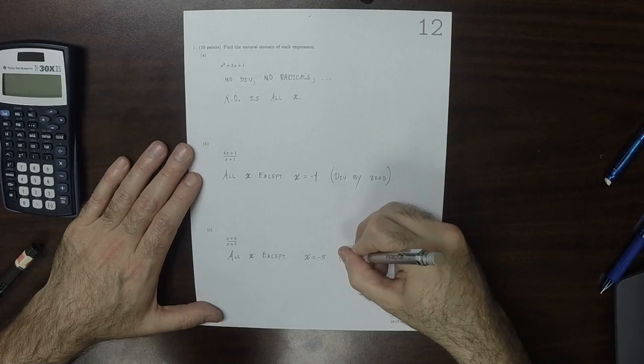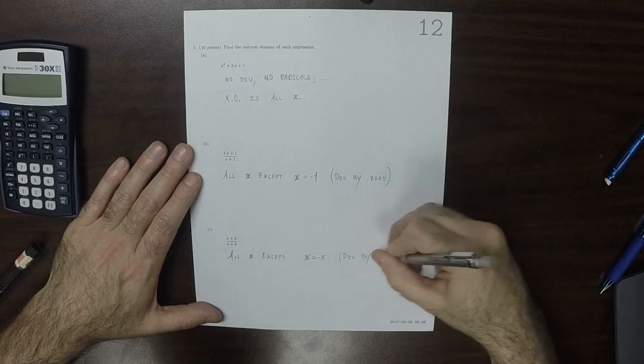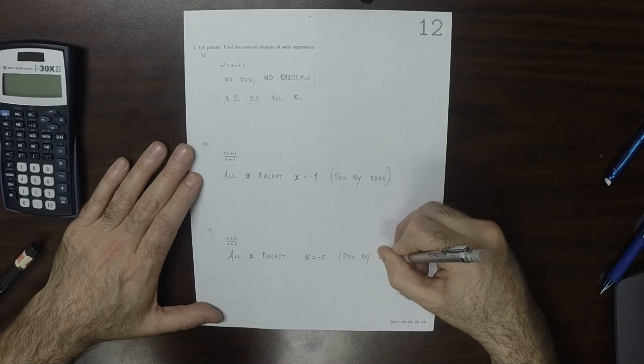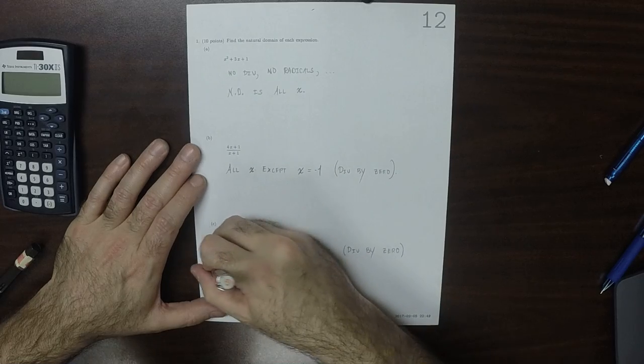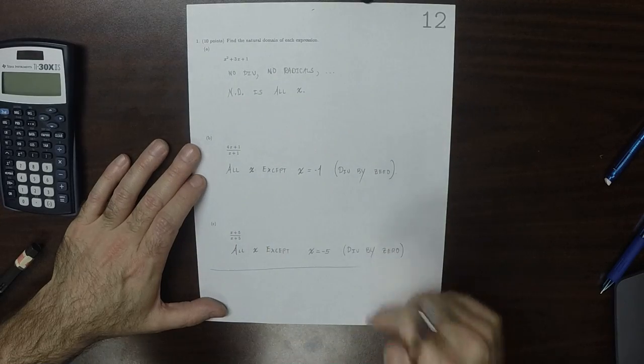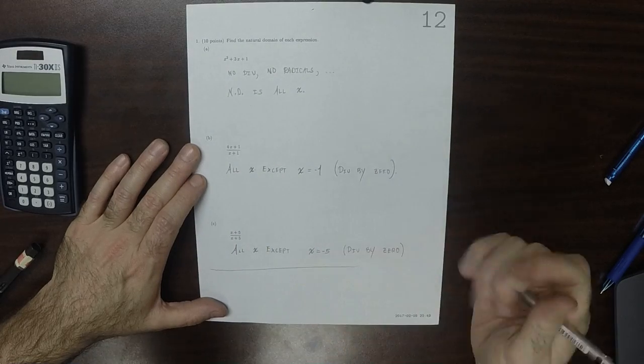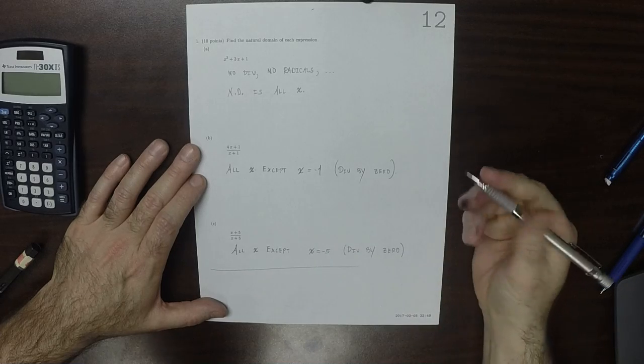Because this is a division by zero. That's the answer to the question, but what I want you to observe in part c